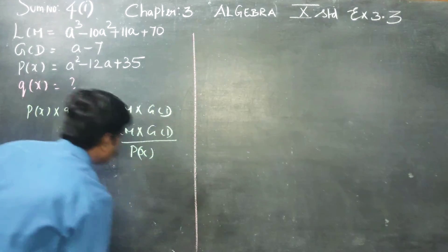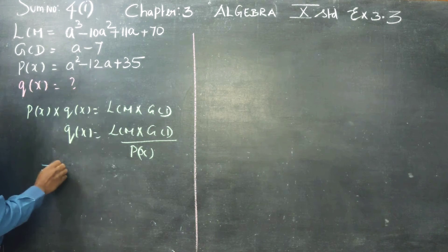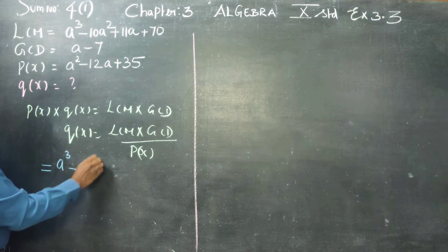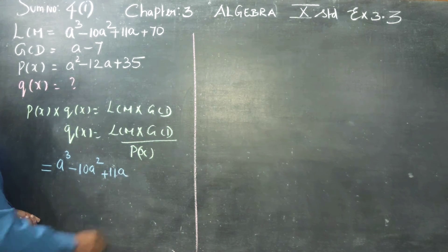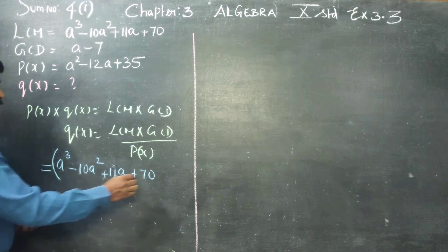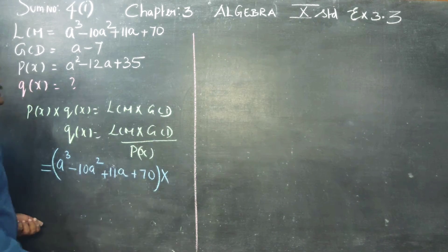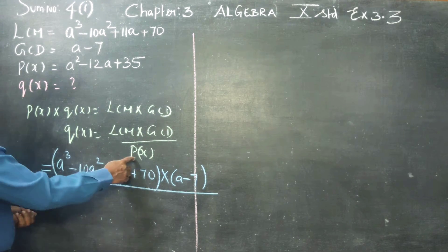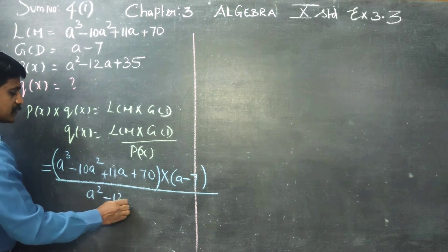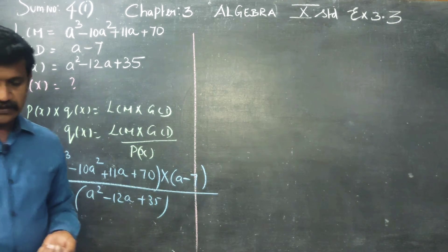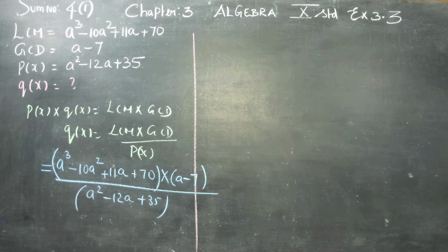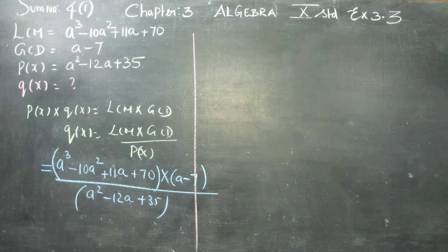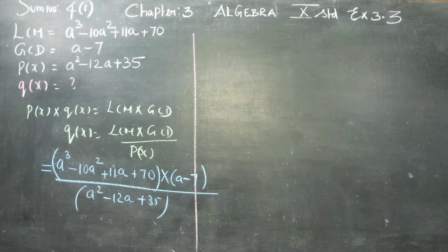What is my LCM? It is A cubed minus 10A squared plus 11A plus 70. What is my GCD? GCD is A minus 7. What is my P of X? P of X is A squared minus 12A plus 35. Therefore Q of X is equal to LCM into GCD divided by P of X.